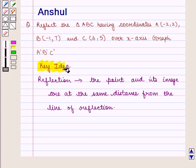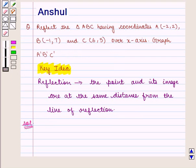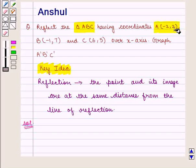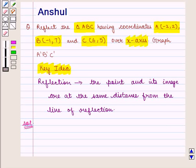With this key idea, let us proceed to the solution. In this question, we are given a triangle ABC having coordinates A(-2, 2), B(-1, 7) and C(6, 5). We have to reflect it in the x-axis. First, we will plot these coordinates on the graph.